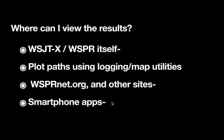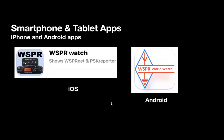Smartphone apps are another way to display these things. There's one for iOS — for the iPhone and iPad — it's WSPR Watch. For Android, it's WSPR World Watch. These are written by different people — because the first application was already copyrighted, the Android developer had to put the word 'world' in there. These are really good. I use the iOS one a great deal — the fellow who wrote it is down in Australia, always looking for more ideas, and constantly improving the app. Best thing is, it's free.